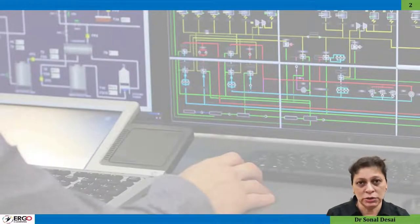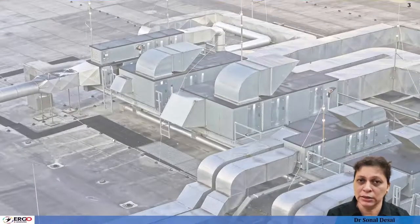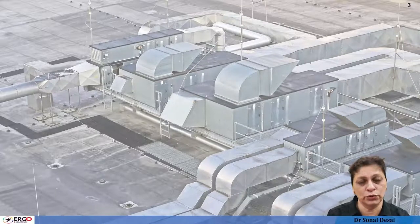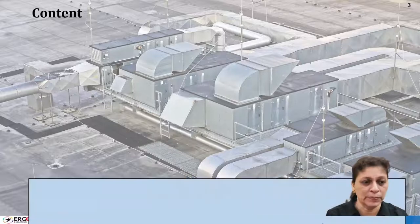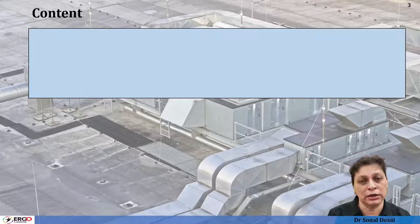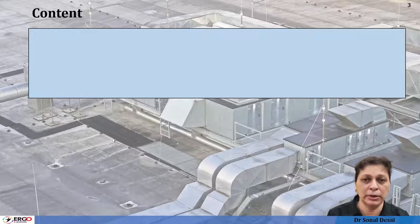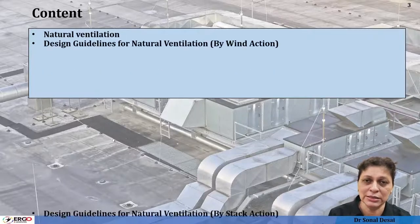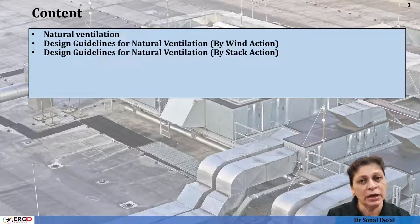This is an introduction video about the course, covering the content overview. For full course details you need to register. A building is an envelope or premises that cuts off the external environment to maintain the internal environment, and for that we need different types of systems. The first system discussed in this series is the ventilation system.